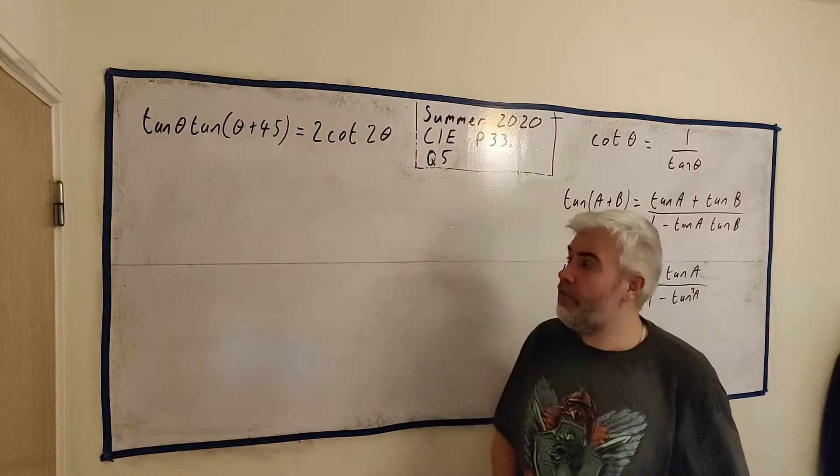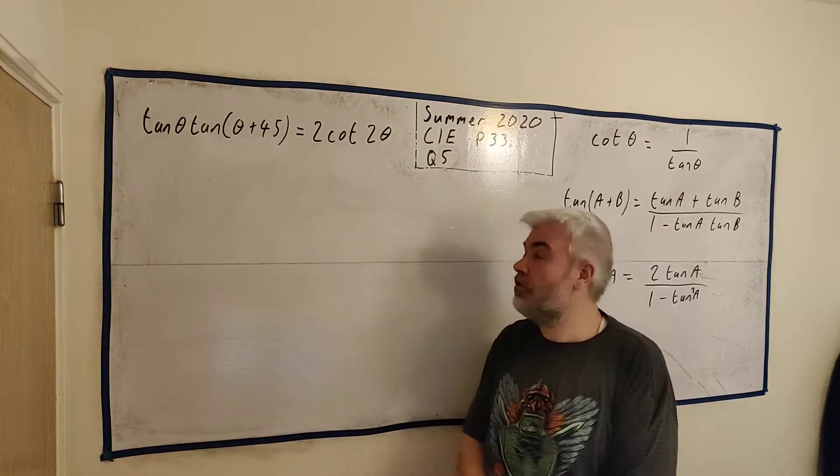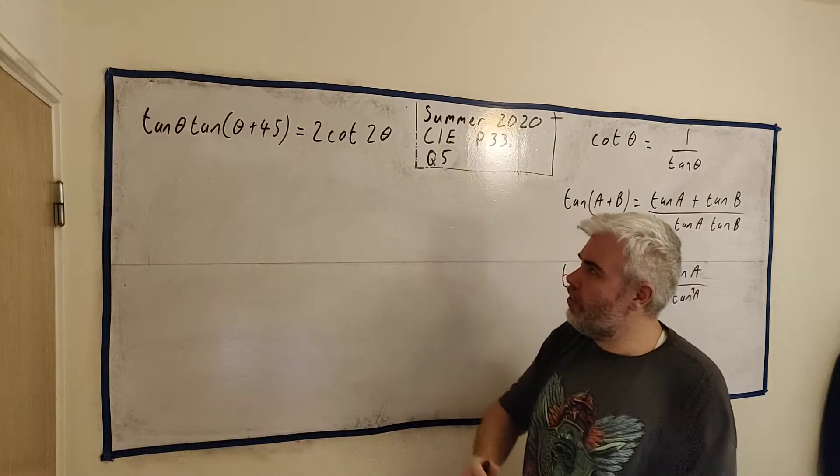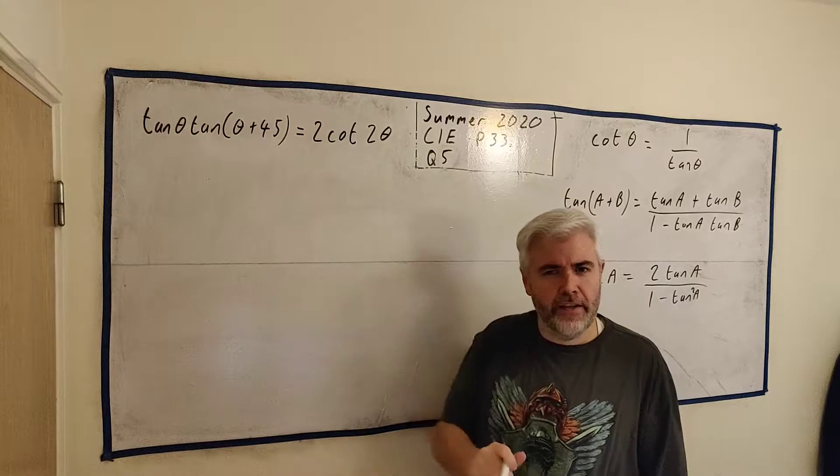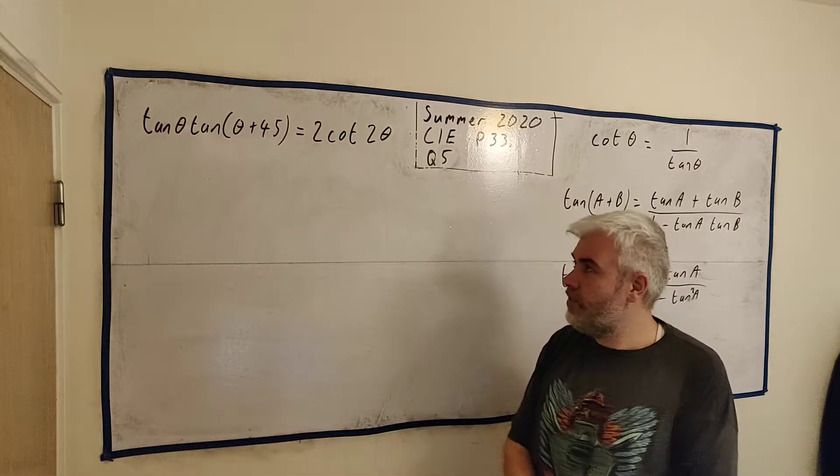So in this question they give us this trigonometric equation here and they ask us to rearrange it so it looks like a quadratic equation and then solve it. But interestingly enough when we're rearranging it you could skip the traditional quadratic equation and get the answer.